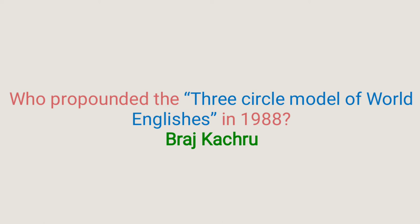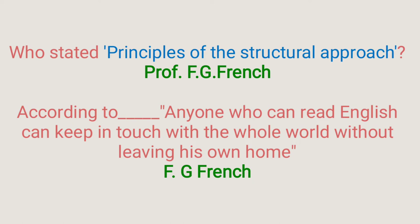Who propounded the three-circle model of World Englishes in 1988? Answer is Braj Kachru. The three circles are: the inner circle (USA, UK, Canada), the outer circle (India, Pakistan, Egypt), and the expanding circle (China, Russia, Brazil).